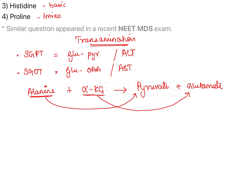This reaction is catalyzed by SGPT — Glutamate Pyruvate Transaminase, also known as Alanine Transaminase — therefore alanine is getting converted into pyruvate. With respect to SGOT, it is aspartate whose amino group is transferred to alpha-ketoglutarate, which results in the formation of oxaloacetate and glutamate.